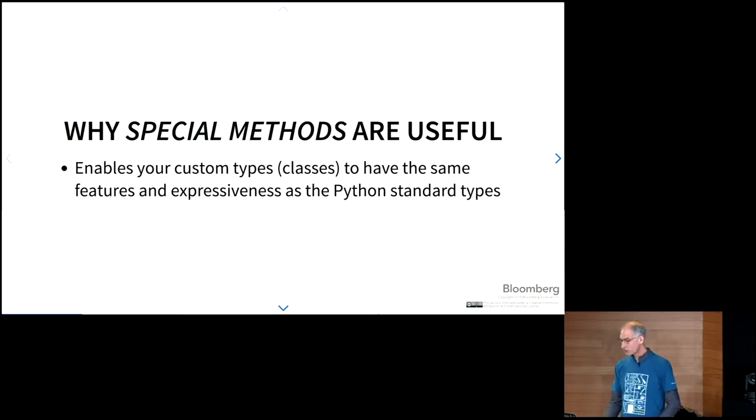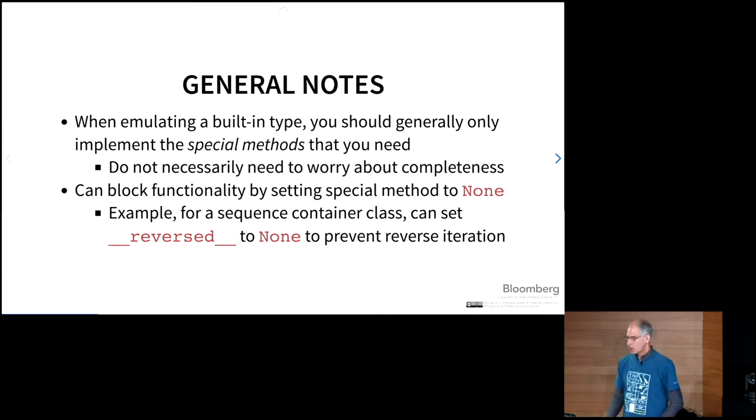So why are special methods useful to you as a developer? They enable you to give your custom types, your classes, to have the same features and expressiveness as the Python standard types. One general note is when you're emulating a built-in type, you should generally only implement the special methods that you need, which is to say, if you are in your own application, you shouldn't necessarily worry about completeness. You should just care about what you need to get your application running. Now if you're a library writer accepting things from other people, then you might want to pay a little more attention to completeness.